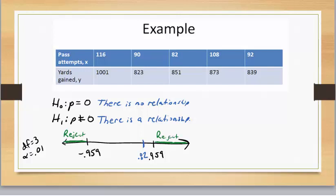And so since our 0.82 is not in that rejection region, for step four we're going to say do not reject the null.